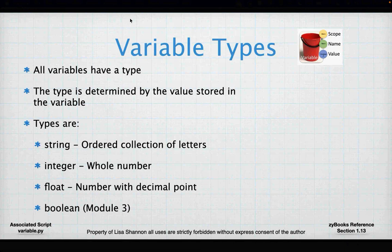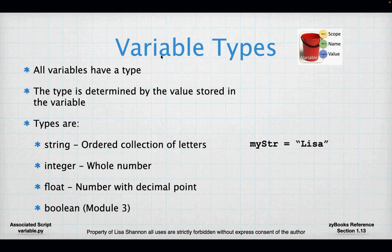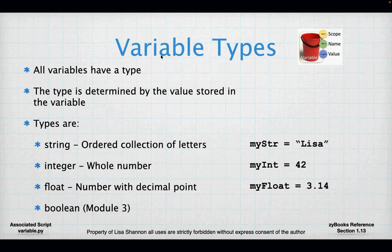Python has four variable types. We have string, which is an ordered collection of letters. We have integer, which is a whole number. Float, which is basically a number with a decimal point. And Boolean, which we're going to talk a lot about in module three. A string has quotes — that's how you know it's a string in Python. An integer does not have quotes and does not have a period. A float does not have quotes but has a decimal point. You can do a lot with those three things.